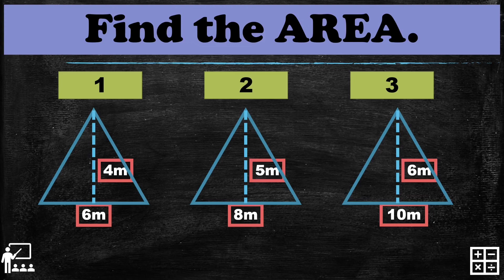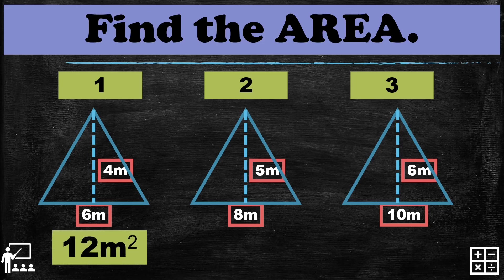Time is up. Let's try to answer each triangle and check your work against my answers. The area of the first triangle is 12 meters squared. I multiplied 6 times 4, which is 24, and divided it by 2 to get 12 meters squared.